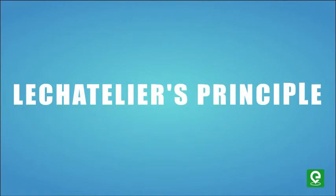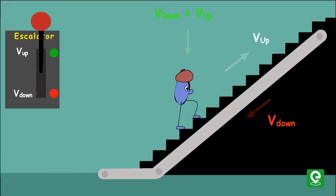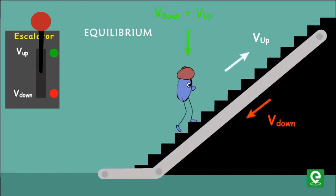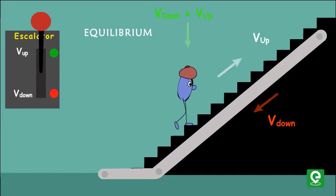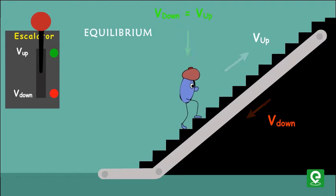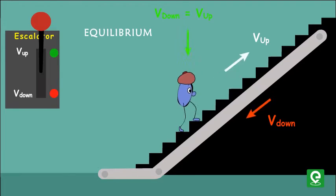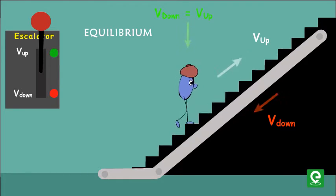Le Chatelier's Principle. Remember our example on equilibrium attained on an escalator? You are going up on an escalator which is coming down at same speed. Thus, you appear to be a fixed point on the escalator.